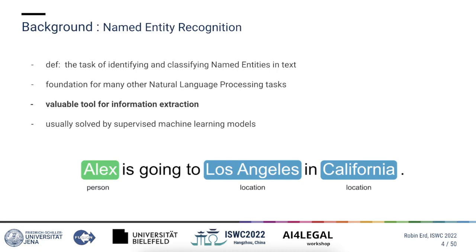Named entity recognition belongs to the field of natural language processing and is often defined as the task of detecting and classifying named entities in text, as you can see on the slide. Named entities in this case can be understood as some predefined semantic classes. A growing number of other applications such as question answering, machine translation, and knowledge base construction rely on named entity recognition, and therefore it's considered a valuable tool for information extraction.